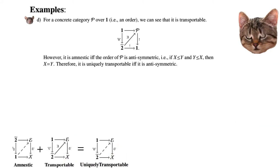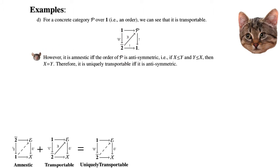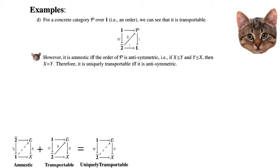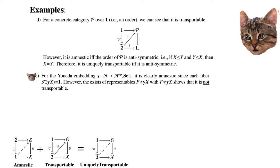For a concrete category P over 1 — in other words, a preorder — we can see that it is always transportable, since the terminal category doesn't add any constraint. It is amnestic if and only if the order on P is anti-symmetric, i.e., P is a poset. Therefore it is uniquely transportable if and only if it is a poset.